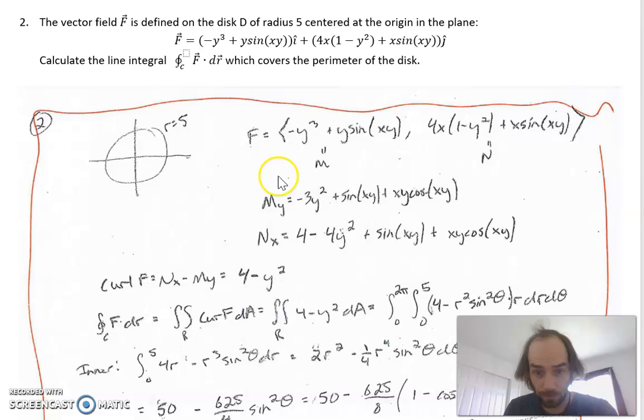I get 4 minus y squared, that's it. Is that correct? Yeah, so the minus 4y squared I do, but then I add this to it, so I get this.